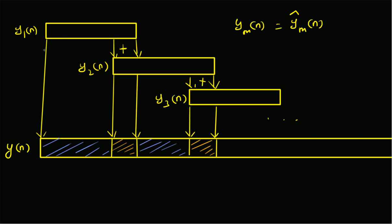To produce the output sequence y(n), we look at the individual output blocks y1(n), y2(n), y3(n), and so on. For the first L values we put them as-is in the output, but for the next M minus one values we add the last M minus one values of y1(n) with the first M minus one values of y2(n), and then place them in y(n).